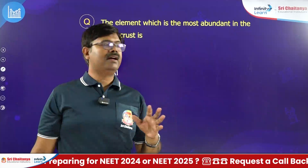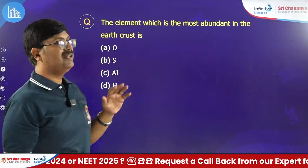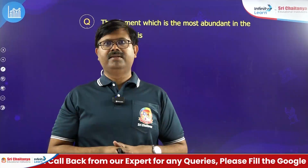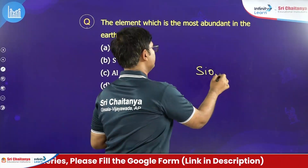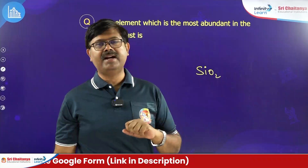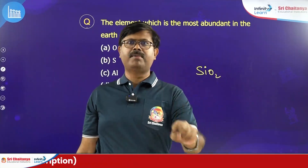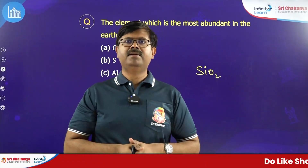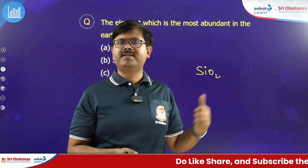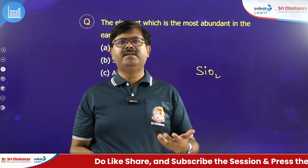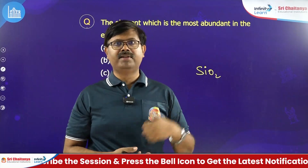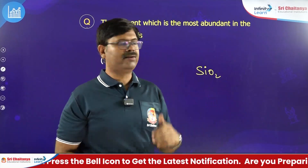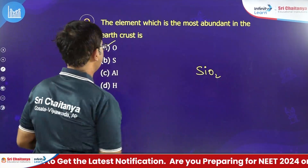Which element is most abundant in the Earth's crust? In the Earth's crust, oxygen is the most abundant element because it mainly exists in the form of SiO2 (sand). Oxygen is the most abundant, and after that if they ask for the next element, that is silicon. First is oxygen, second is silicon. So oxygen is the answer.